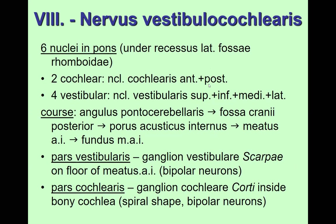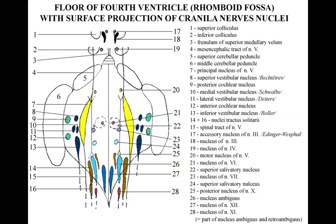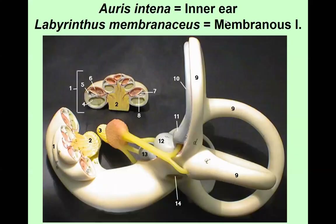The ganglion of the vestibular nerve is located on the floor of the internal acoustic meatus. The ganglion for hearing is inside the cochlea, which has a spiral shape — so the cochlear ganglion also has a spiral shape. The nuclei are the most lateral in the brainstem because they are special sensory; two cochlear nuclei (anterior and posterior) and four vestibular nuclei (superior, inferior, medial, lateral).